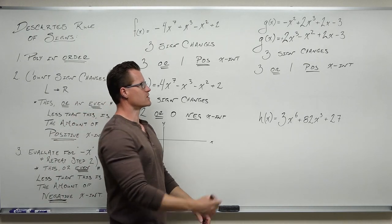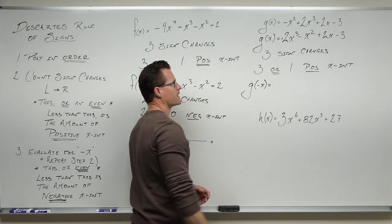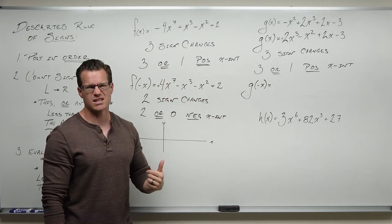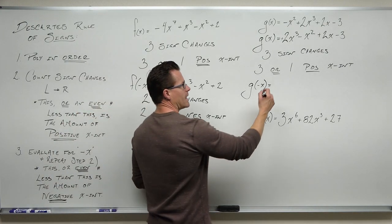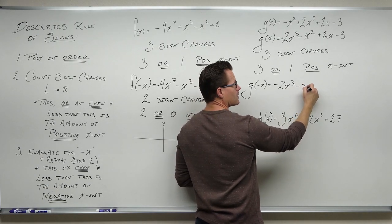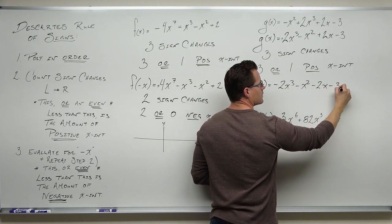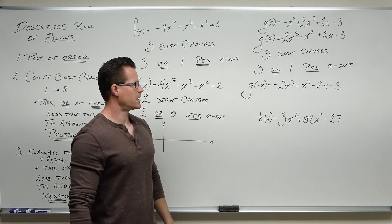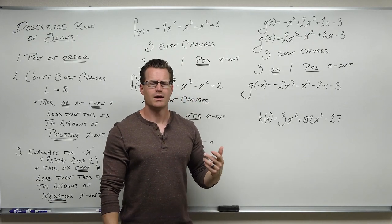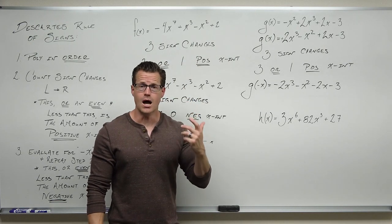Now let's finish this off. If we evaluate g of negative x, what we do is change our odd powered terms — change the sign of those. So we're going to have negative 2x cubed, leave the x squared alone, minus 2x — leave the constant alone.